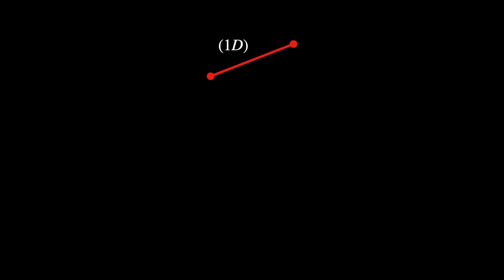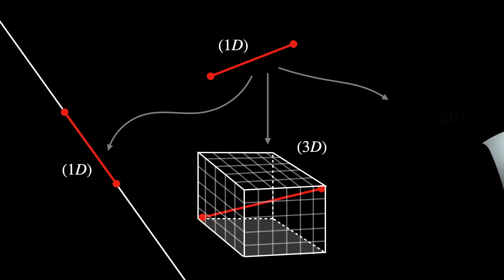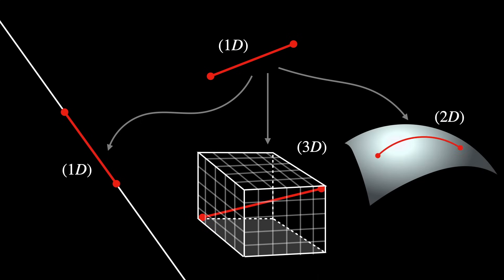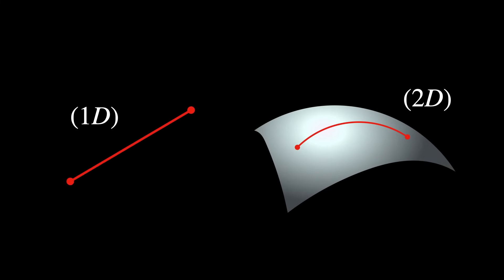What about a line segment? Well, you could embed it into a line, into a cube, or even into a curved sheet. In this last case, the line segment lost one of its properties, since it's not straight anymore.